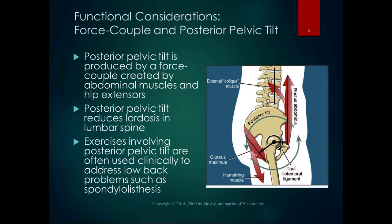The posterior pelvic tilt is produced by the force couple created by the abdominal muscles and the hip extensors. The rectus abdominis and obliques pull the pubic symphysis superiorly, pulling the anterior part of the pelvis in a superior direction. The hip extensors pull the posterior part of the pelvis in an inferior direction — turning the steering wheel the other direction. Exercises involving a posterior pelvic tilt are used to address low back problems such as spondylolisthesis and lumbar stenosis.